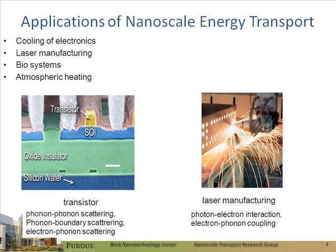Other applications of heat transfer include self-heating of nano or microelectronic devices — heating of transistor structures with a buried oxide that is generally thermally insulating. This has caused so many problems in practice that we really don't see clock speeds of microprocessors increasing anymore; it's plateaued and they're moving to architectural changes to enhance computational speed. Laser manufacturing is another application where heat transfer is obviously important if you're going to melt or ablate a material.